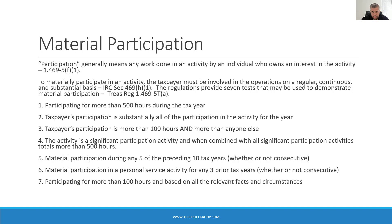The first test requires you participate more than 500 hours during the year. The second test says your participation represents substantially all participation for the activity for that tax year — if you're the only person doing repairs, collecting rent, handling leases, etc., you'll pass this test. The third test requires 100 hours and more than anyone else. This allows others to help you out, but you have to hit the 100-hour threshold and show that you participated more than anyone else.